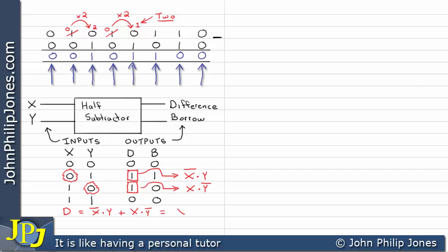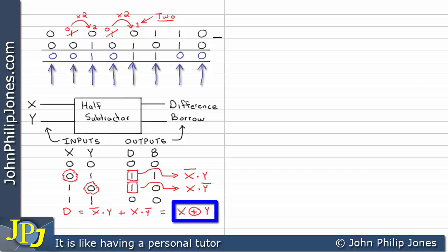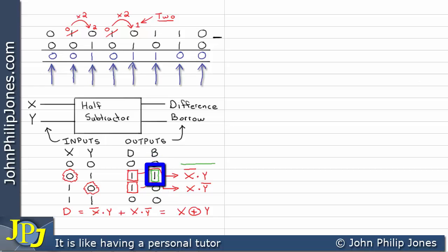Previous videos should have shown you that this Boolean expression is the exclusive-OR expression, so this can be written as x XOR y. If we now consider the borrow output, we can see there's a 1 in only one row, and that's going to give us the value not-x AND y. So the borrow can be expressed as not-x AND y.